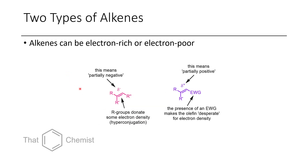The two different types of alkenes include electron-rich alkenes, where the alkene is partially negative. The carbons are donating a little bit of electron density from the carbon-carbon bond into the alkene — this is called hyperconjugation. It's not formally positive or negative the same way as a Michael acceptor, but the substituents make it a little more electron-rich. The more substituted an alkene is, the more electron-rich it tends to be. If we have an electron-withdrawing group, this makes the alkene partially positive because the carbonyl is pulling electron density away from the double bond.